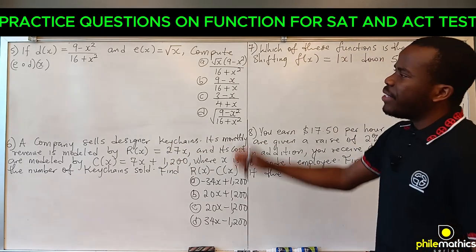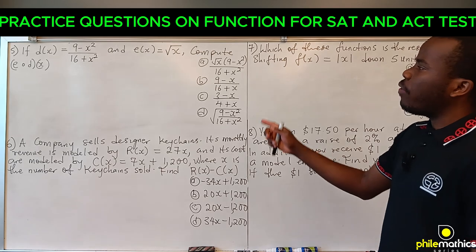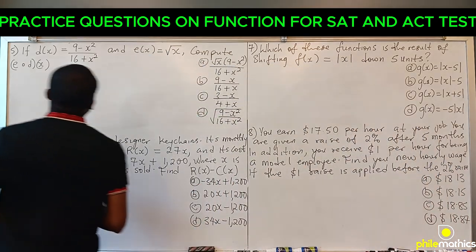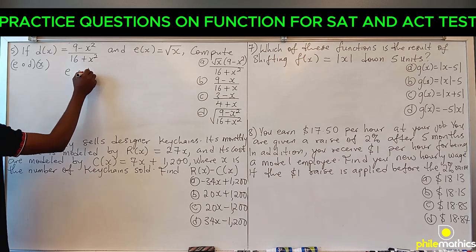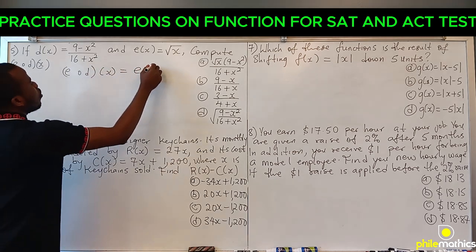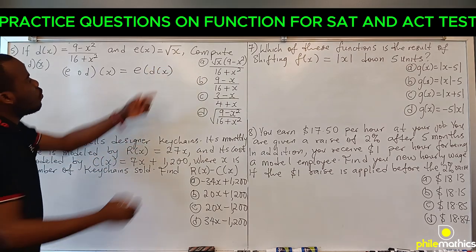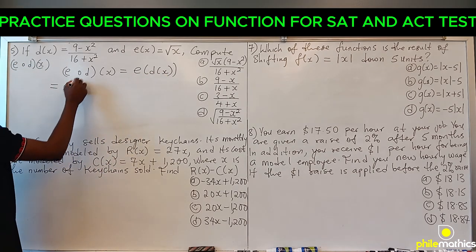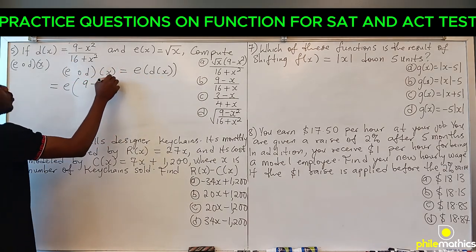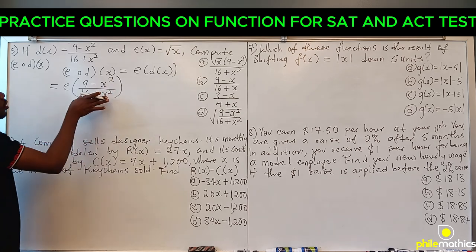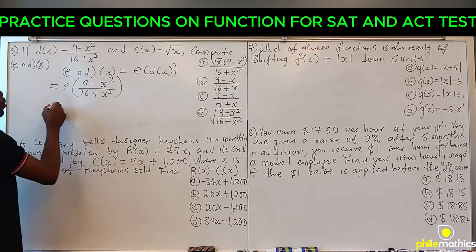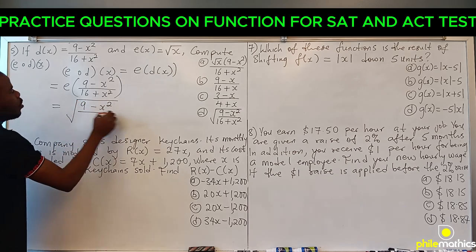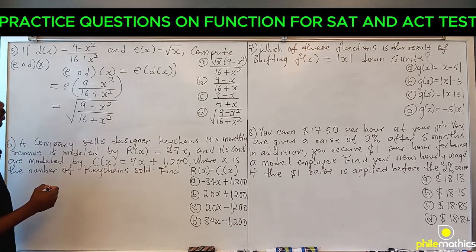Question 5: If D(x) = (9 - x²) / (16 + x²) and E(x) = √x, compute E of D of x. This is composition of functions. E of D(x) means we take D(x) and put it in for x in E(x). So E(D(x)) = √((9 - x²) / (16 + x²)). The correct option is D.